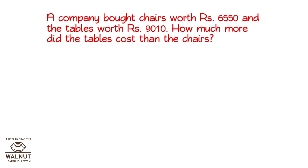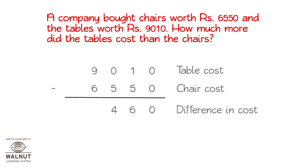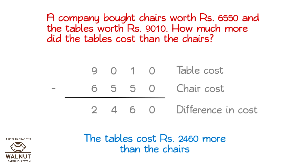A company bought chairs worth rupees 6,550 and tables worth rupees 9,010. How much more did the tables cost than the chairs? We have to find out how much extra the tables cost. We can get that by finding the difference between the table cost and the chair cost. We do the subtraction and the tables cost rupees 2,460 more than the chairs.